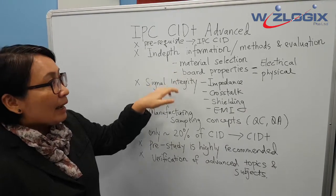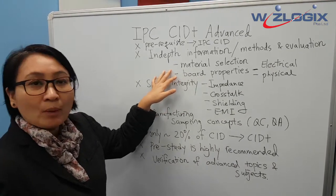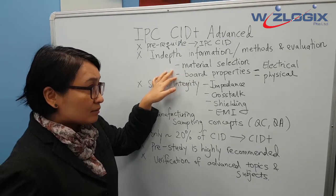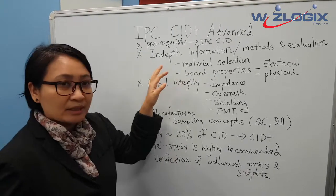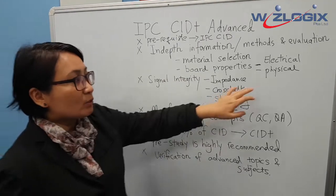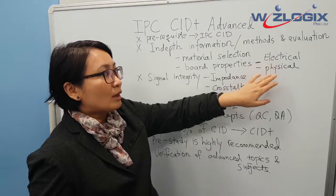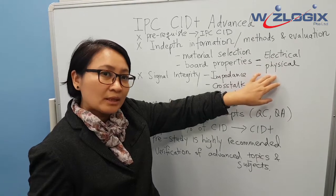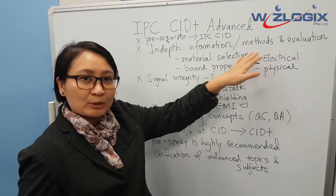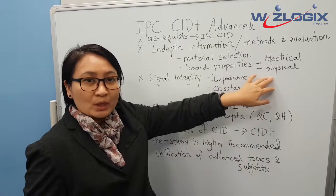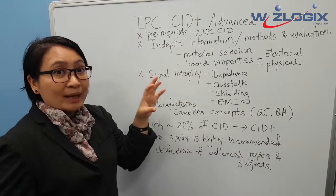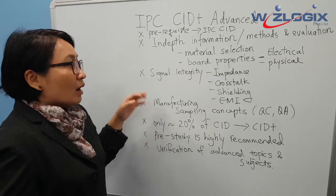We look at your board properties in order to design your PCB for optimal performance. We will talk about electrical and physical properties in detail, relating to both electrical design and thermal design — a lot more in-depth information compared to the basic CID.